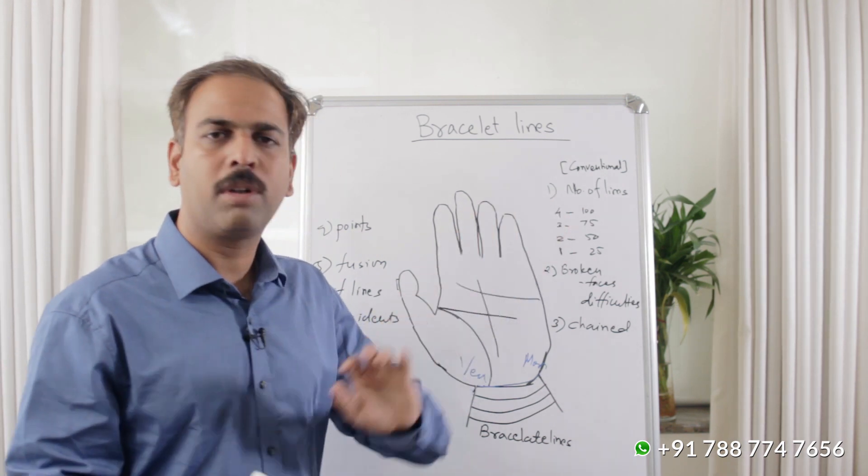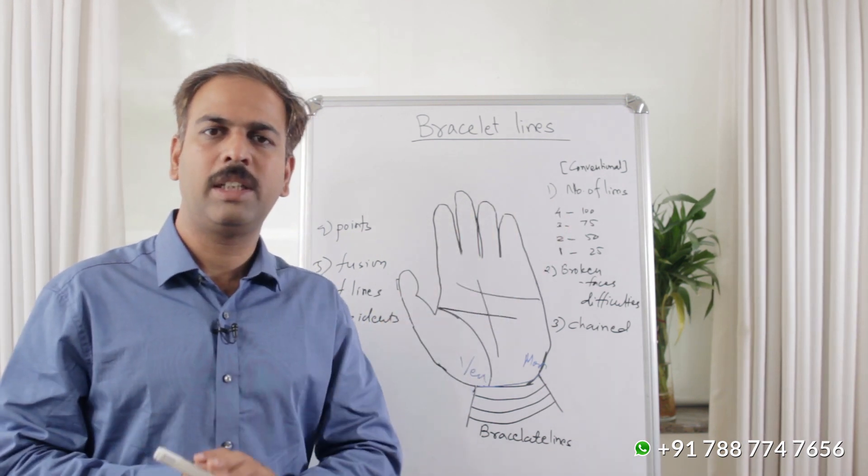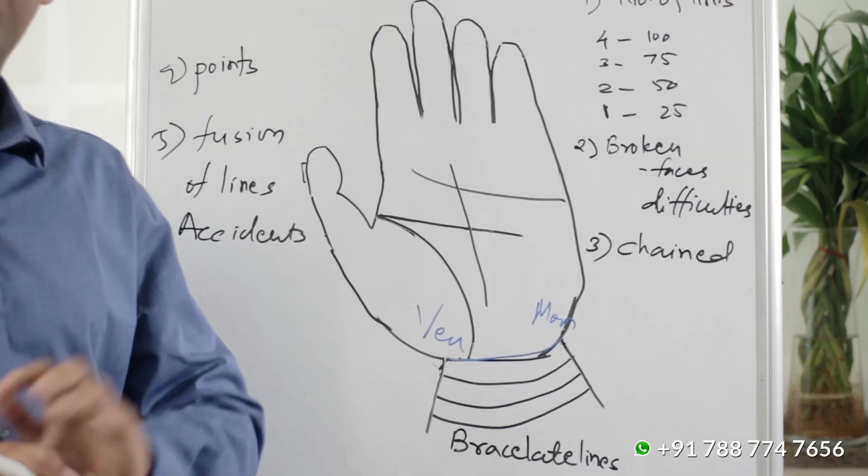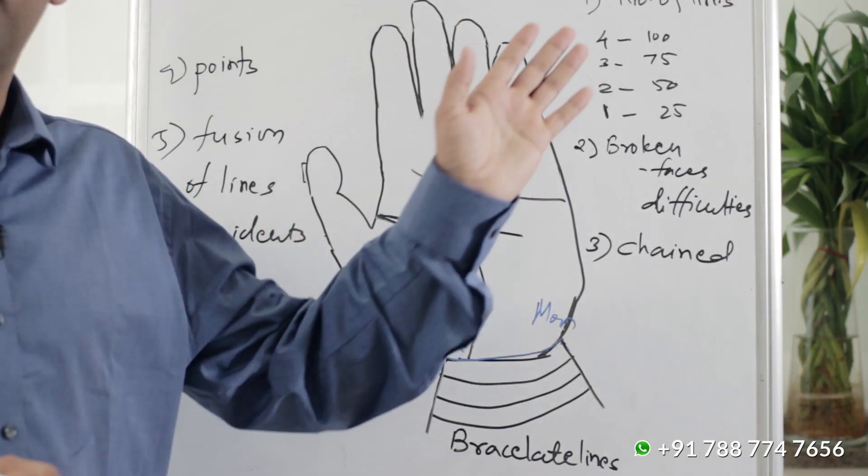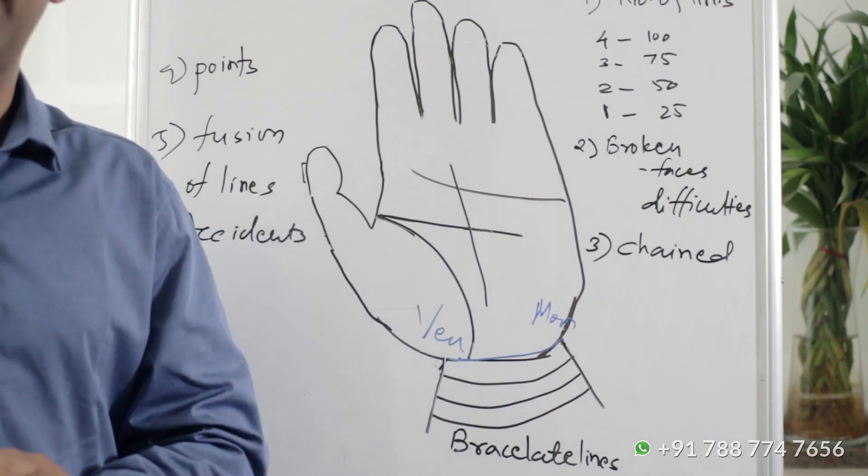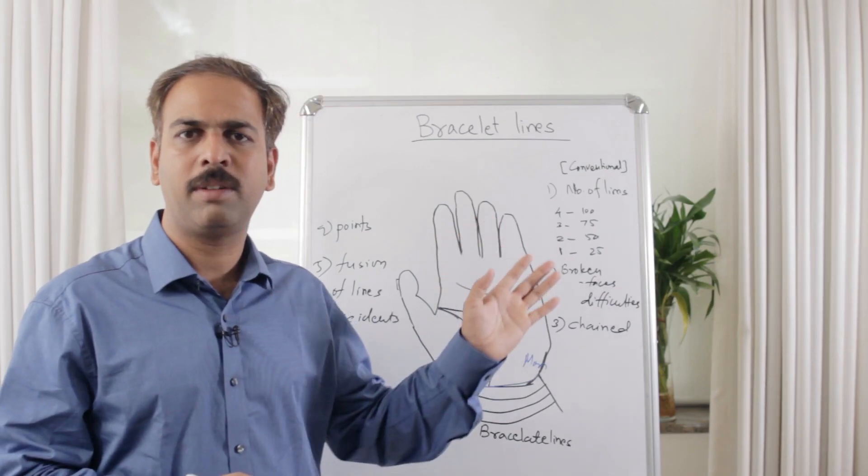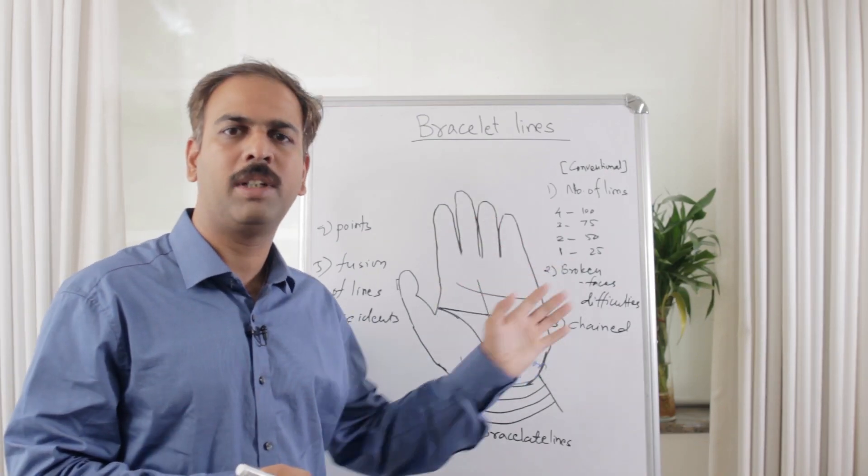First is the number of lines. Conventionally, it is said that if you have four clear lines, then you can live up to 100 years. If three, 75, if two, 50, and if one, 25.